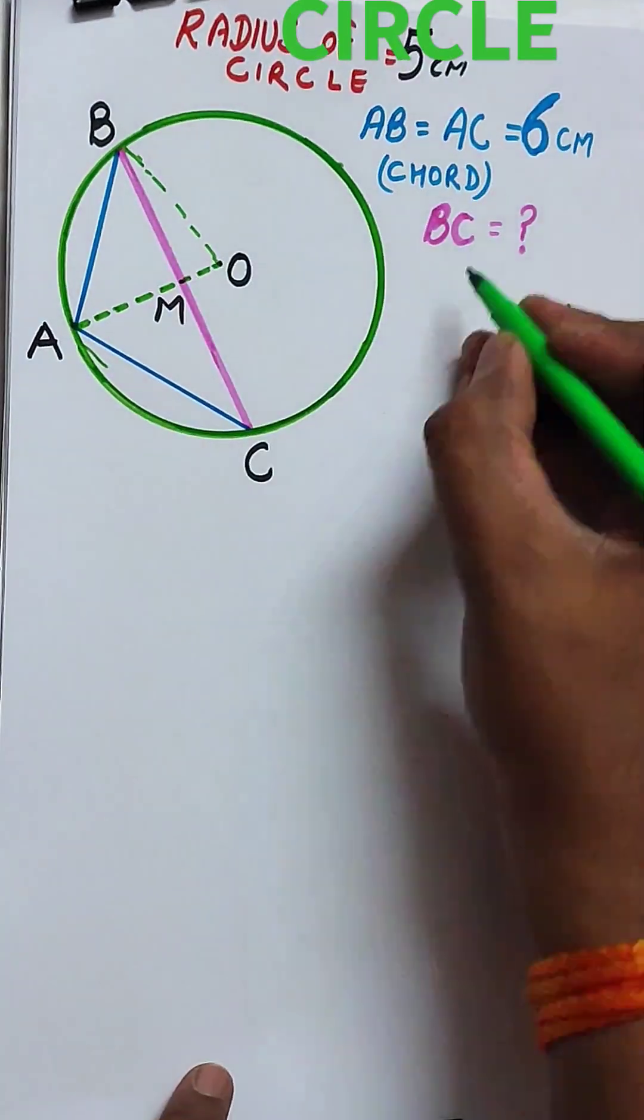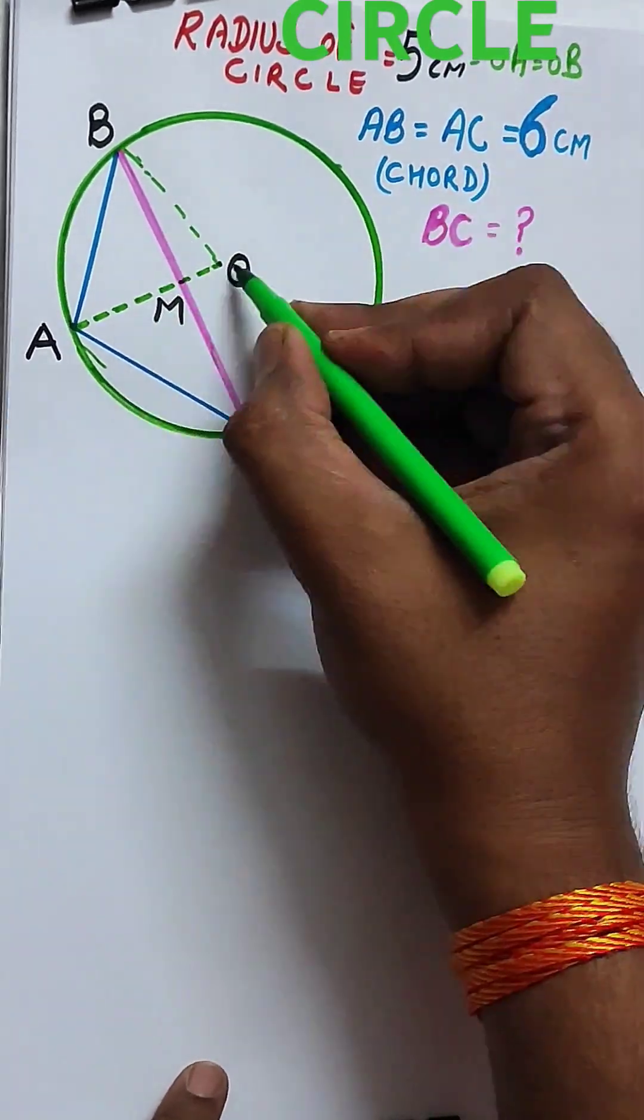Given a circle with radius 5 cm, so OB equals 5, which equals OA, which is the radius.